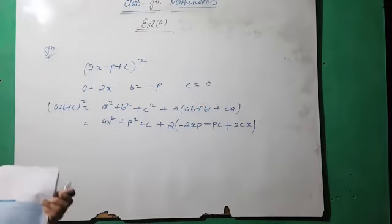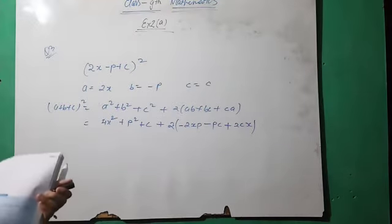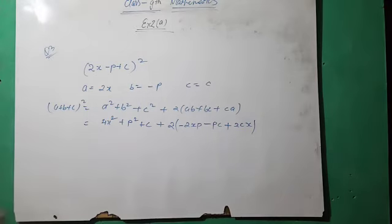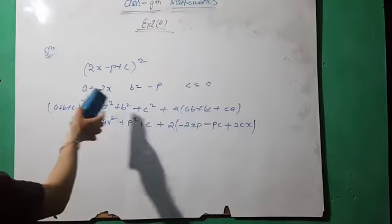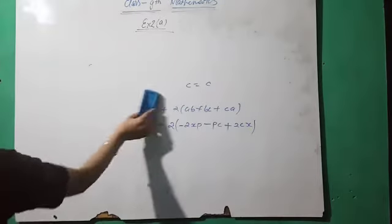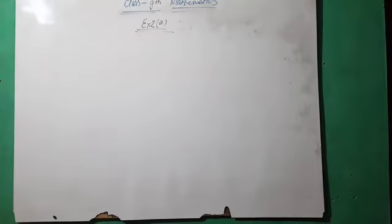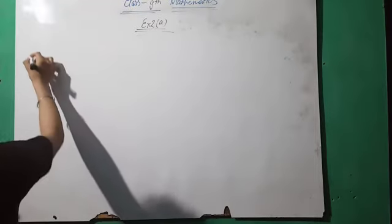So if this is the result, then we have to find out 2x plus p minus c. Similarly you have to find the second one and then subtract the second part from the first. Question number three you have to complete by your own. Do this question in your fair copy as per the instruction I am giving you. Question four, second part and first part.